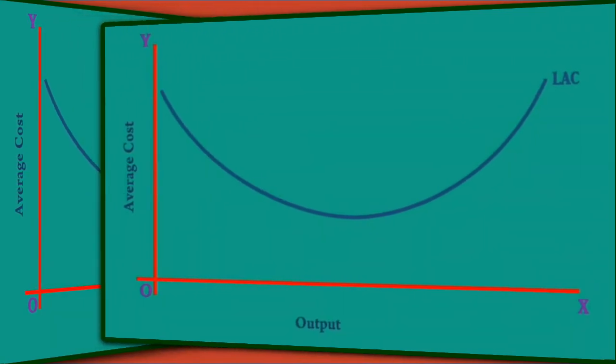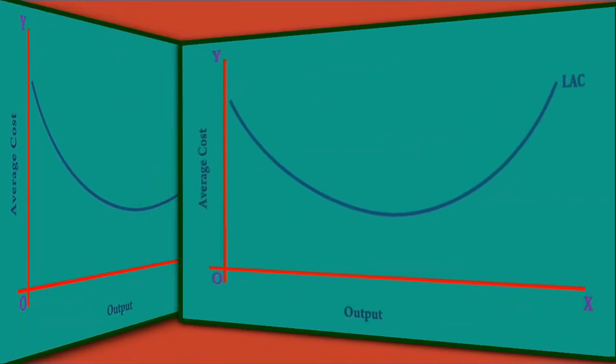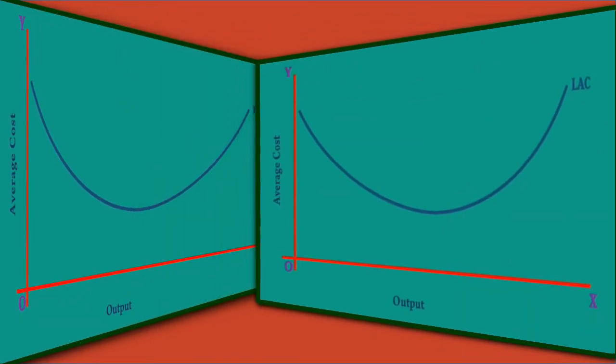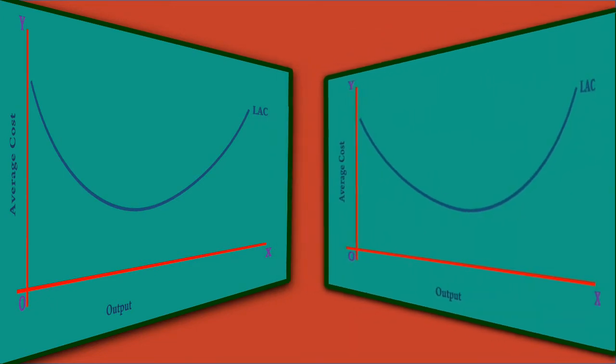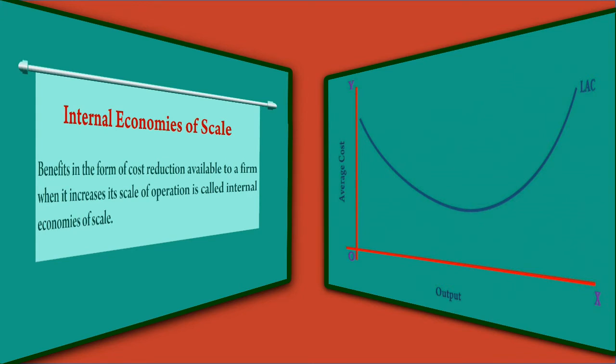But why at all does this law operate? It is all due to internal economies of scale. Benefits in the form of cost reduction available to a firm when it increases its scale of operation is called internal economies of scale.